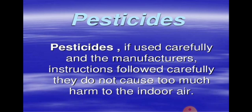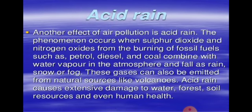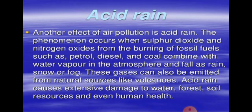Pesticides are chemicals used for killing pests — small organisms that cause harm to crops. Farmers mainly use pesticides in their crop fields. If used carefully and with manufacturers' instructions followed, they do not cause too much harm to indoor air. Biological pollutants include pollen from plants, hair from pets, fungi, parasites, and some bacteria. Most of them are allergens and cause asthma, hay fever, and allergic diseases.